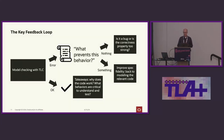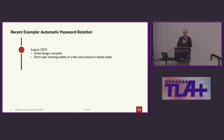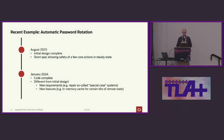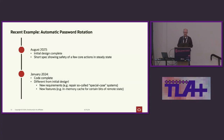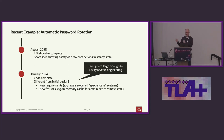I want to walk you through a recent example. We set out to do automatic password rotation for a bunch of databases internally. Here's my timeline: August 2023, the initial design was complete, and at that time we actually did some TLA+ — wrote a short spec showing that the core actions were going to be safe. Fast forward to January this year: it's code complete and running, but it's actually quite different from the initial design in some important ways — new requirements to repair so-called special case systems, machines that have been around for many years and differ from the norm, and new features like in-memory caches for certain bits of information the rotation algorithm needs. This divergence from the initial design is large enough to justify going back to the source code and reverse engineering what it is doing.